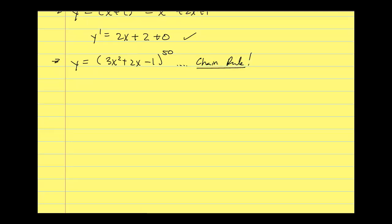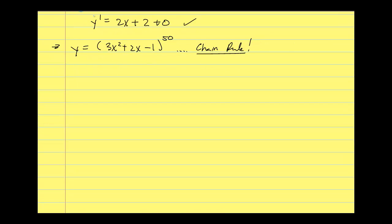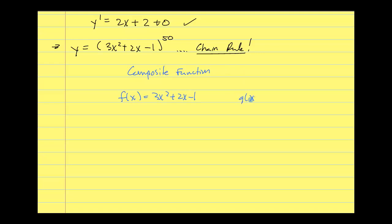With the chain rule, this function is called a composite function — it's made up of two different functions. I have one function f(x) equal to the argument or base, and another function g(x) equal to u to the 50th. If I look at the composite of these functions, I can recover the original. Only one of f(g(x)) or g(f(x)) will work correctly, so we need to figure out which one it is.